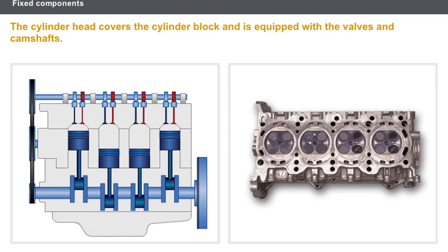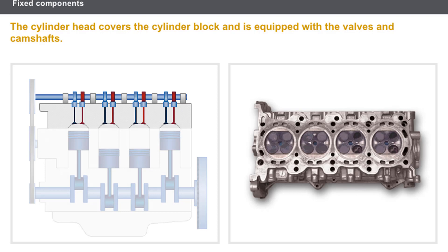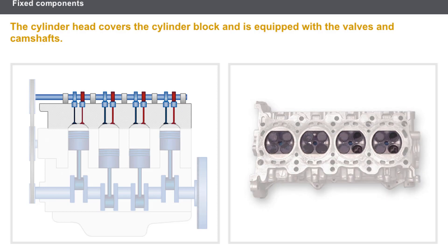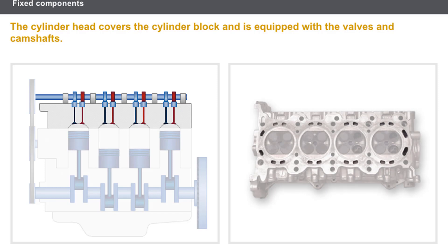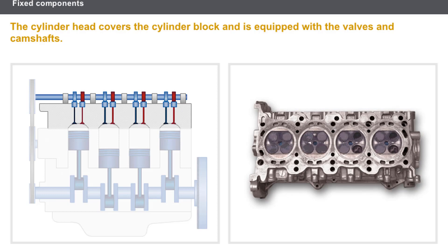The role of the cylinder head is to evacuate some of the heat created by combustion of the gases. The cylinder head covers the cylinder block and is equipped with the valves and camshafts. It consists of: combustion chambers in which the spark or glow plugs are located, fresh gas inlet tracts, exhaust tracts for the burnt gases, and a network of cooling channels connected to the cylinder block. The cylinder head is usually made of a light alloy.